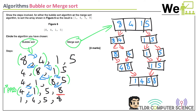Drawing bubbles helps consolidate the idea behind the name bubble sort. In terms of efficiency, merge is better. One drawback of merge sort compared to bubble sort: merge sort requires additional space, while bubble sort can be done in the original array. Merge sort is more efficient with a larger number of items.